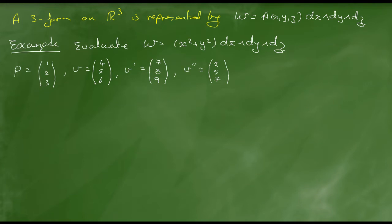I'll work with an example to explain it. Suppose we have the expression x squared plus y squared times dx wedge dy wedge dz. Here the function A is x squared plus y squared. Let's explain how we evaluate the three-form represented by that expression on a given point P and three given vectors. First, we evaluate the function x squared plus y squared at the point P. The x and y correspond to the first two entries of point P, so we calculate one squared plus two squared. And then we multiply by a certain volume.